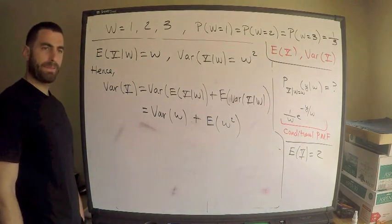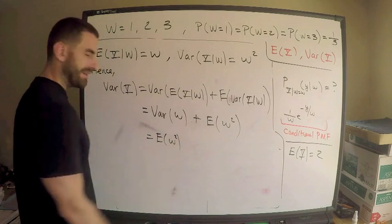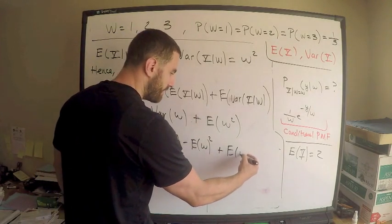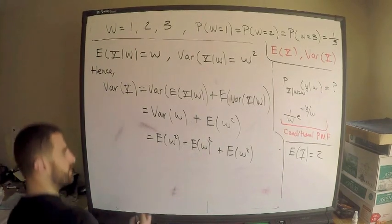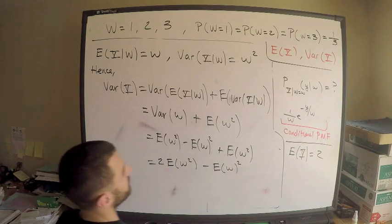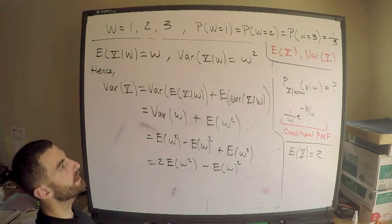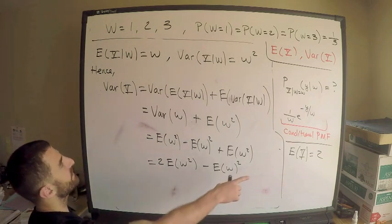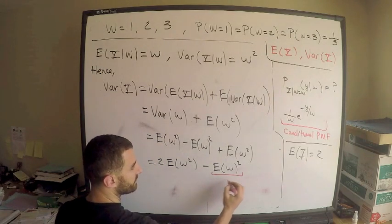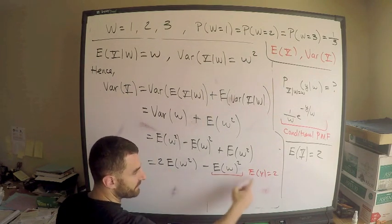So Var(Y) equals Var(W) plus E[W²]. Now Var(W) equals E[W²] minus (E[W])². So substituting, this is E[W²] minus (E[W])² plus E[W²], which equals 2 times E[W²] minus (E[W])² squared. We already found E[W] = E[Y] = 2, so (E[W])² = 4.